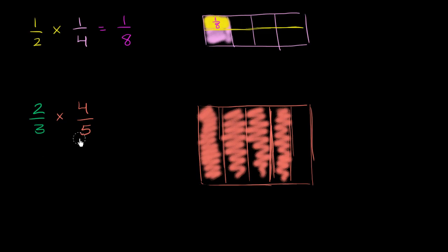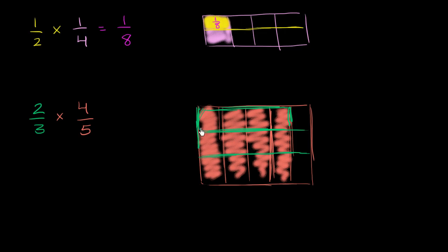Now we can view this as 2/3 of the 4/5. We can take this section and divide it into thirds — three equal sections. So that's one third and then two thirds. We took each of the five equal sections and divided them into three equal sections. Two thirds of the four fifths would be this part right over here — that is 2/3 times 4/5.